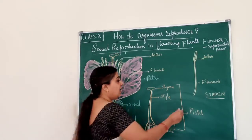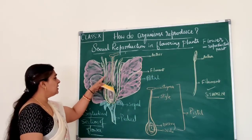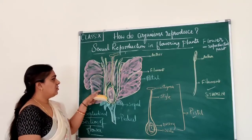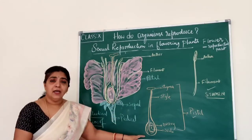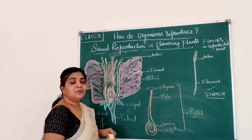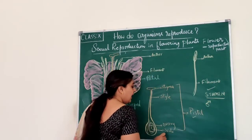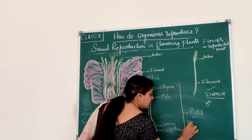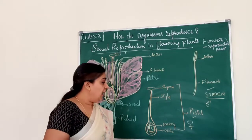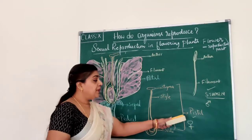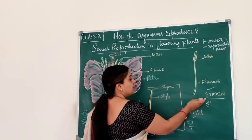The main reproductive parts of the flower are the stamen and the pistil. Stamen is the male reproductive part and the pistil is the female reproductive part. The pistil is also called the carpel.